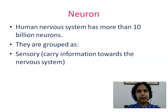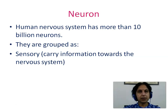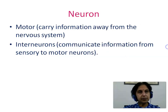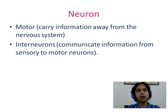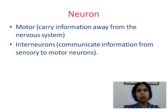The human nervous system has more than 10 billion neurons. They are grouped as sensory neurons which carry information towards the nervous system, motor neurons which carry information away from the nervous system, and interneurons which communicate information from sensory to motor neurons.